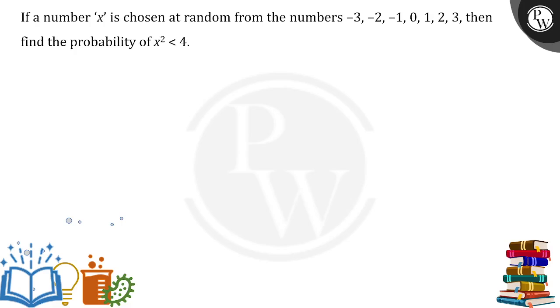A number x is chosen from a set of random numbers: x can be -3, -2, -1, 0, 1, 2, 3. We want the probability that x squared is less than 4.